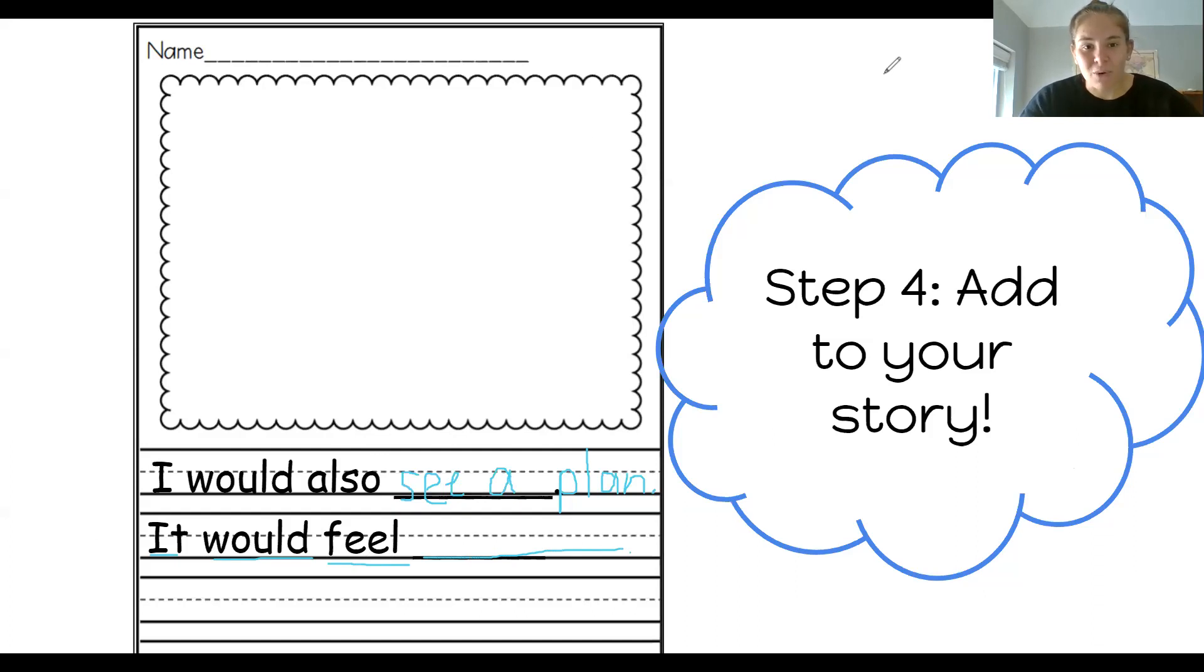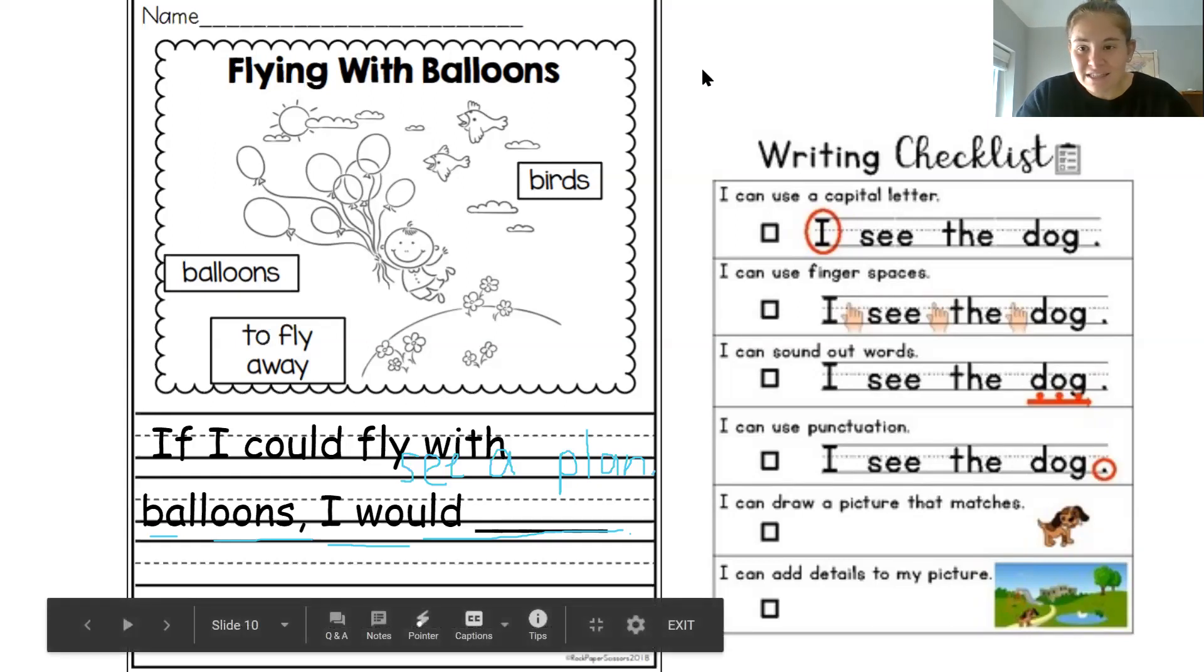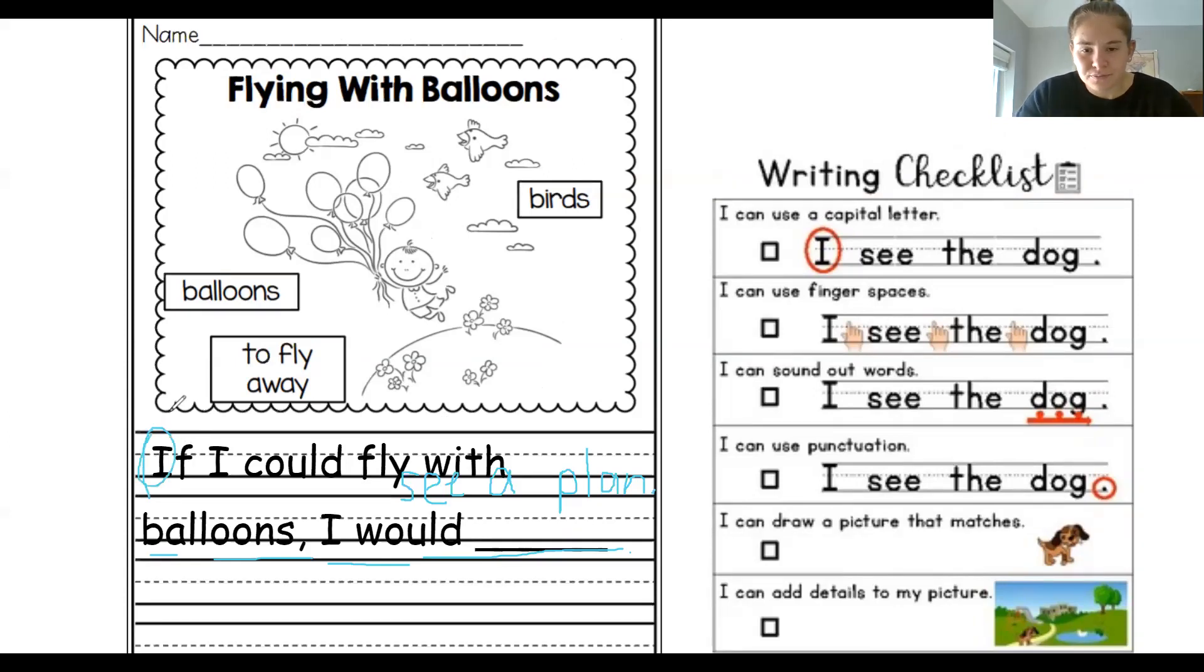Okay, great. So we made it through step four of our creative writing process and now we're gonna check our writing because good writers go back and check and make sure that they've written everything the right way. So first of all, we want to make sure we use a capital letter. So at the beginning of our sentence, we started with a capital I, for if I could fly. Go ahead and make sure your I is capital too. We also want to make sure that we use finger spaces when we write. So after every word that you sound out, make sure you put your finger on the paper and leave a space and then start writing again after your finger. I think I left some good spaces here, so I'm going to give myself a check. I can sound out words. So make sure that you used your letter sounds to write down the words that you came up with, okay? You can go over the words and see if you can read them based on your letter sounds too to check.